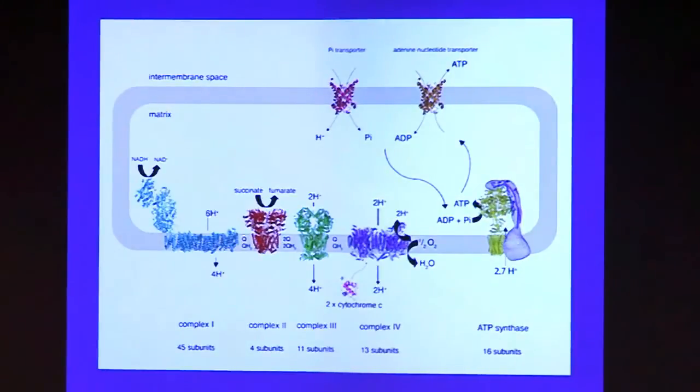And since we know how much oxygen we each breathe in per day, we can actually calculate how much ATP each of us makes, and it's at the order of 50 to 60 kilograms per day, equivalent to our body weight.